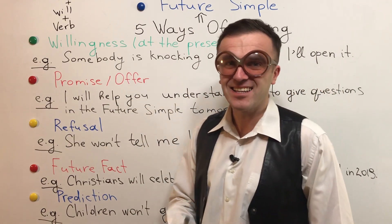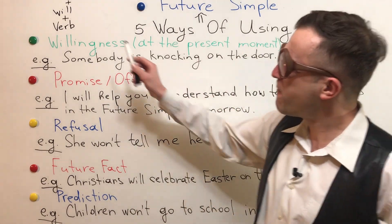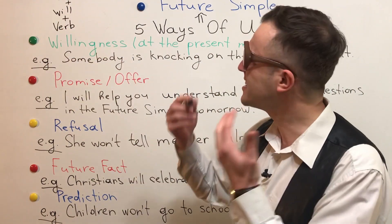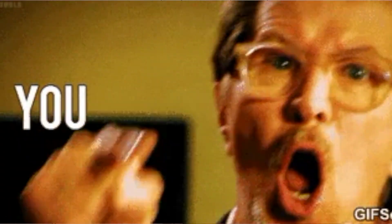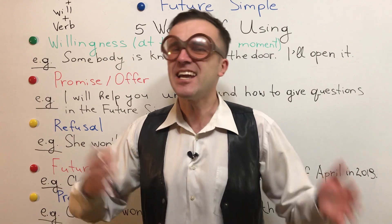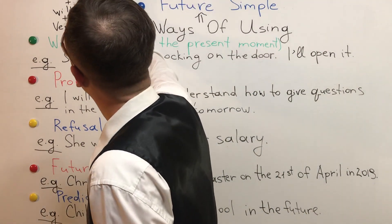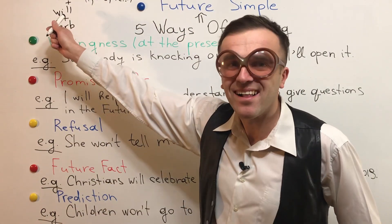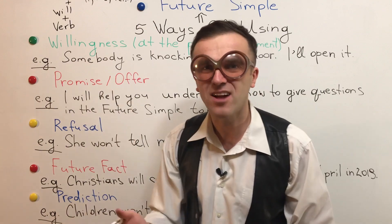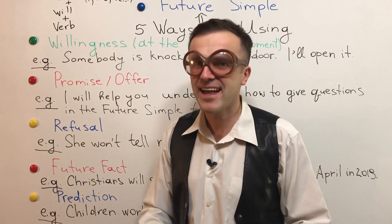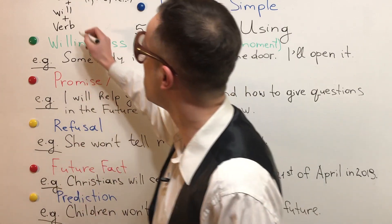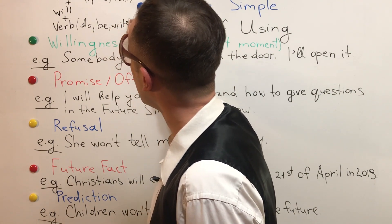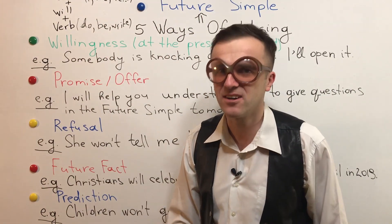So before we start, I would like to tell you that the formation of the Future Simple is: person — that is I, you, we, he, she, it — then plus will. Will is constant. And plus verb, any kind of verb without 'to'. So it could be do, be, write, read, whatever. They are verbs.